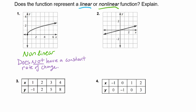Let's take a look at number 2. Here we see our function goes through (0, 0), and as we increase by one, we go over 4 — so up 1 over 4, or down 1 over 4. We have a constant rate of 1 to 4 and we see that our line is straight. So this is a linear function because it has a constant rate of change.